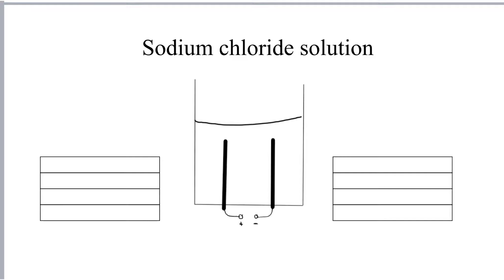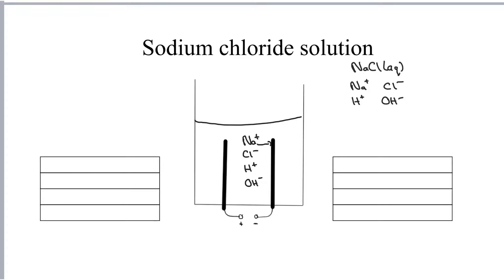Let's think about sodium chloride solution — NaCl(aq). We've got Na+ ions and Cl- ions from the sodium chloride, and H+ and OH- ions from the water. When we connect everything up, the sodium ions and the hydrogen ions are going to be attracted to the cathode. Sodium is a lot more reactive than hydrogen, therefore we're going to get hydrogen gas produced. If you wanted to collect the hydrogen, you could get an ignition tube full of water, invert it on top, let the hydrogen displace the water, and it should burn with a squeaky pop.